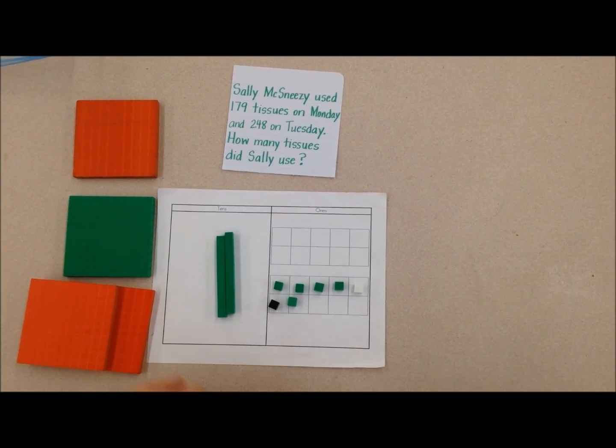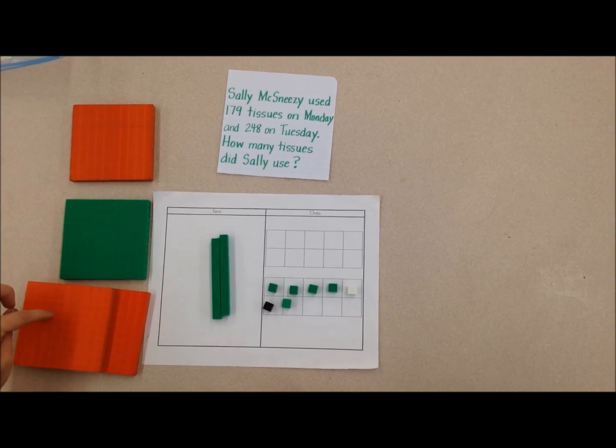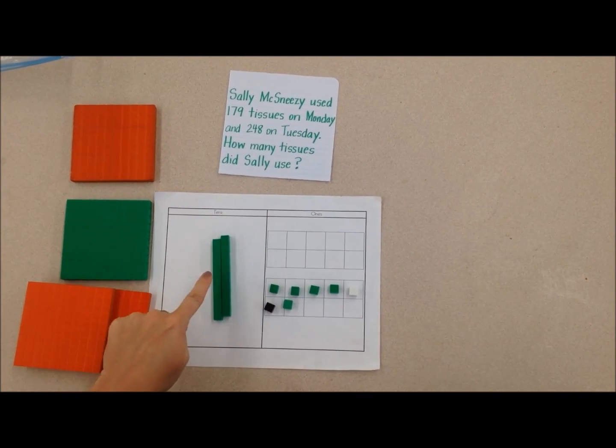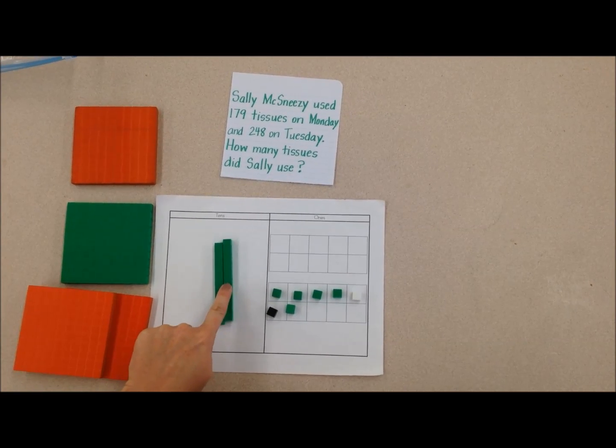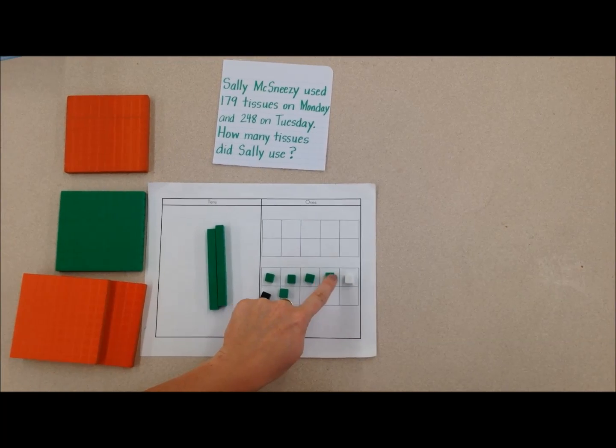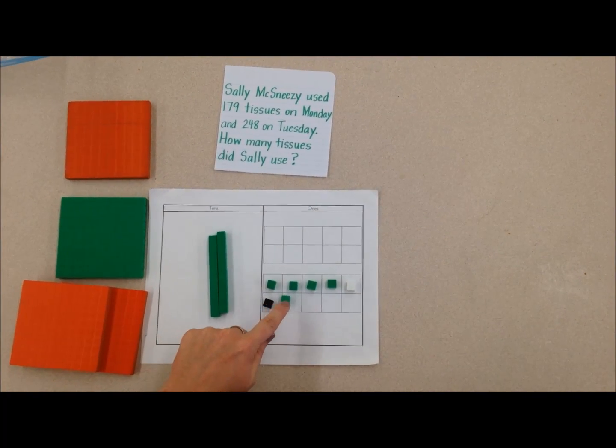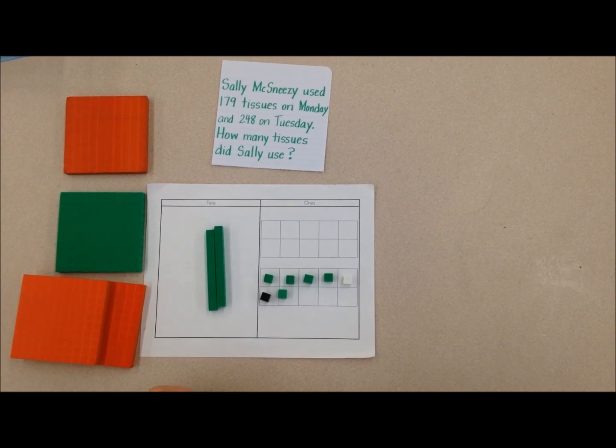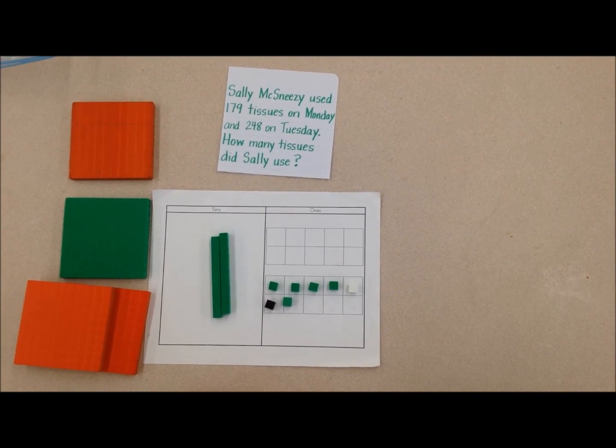So then when I combine all these together, I have 100, 200, 300, 400, 410, 420, 421, 22, 23, 24, 25, 26, 27. So she used 427 tissues.